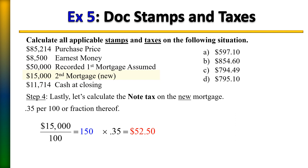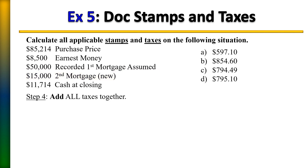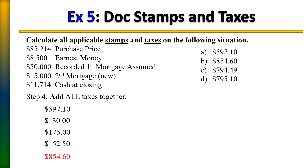All we need to do now is take all of those different amounts and simply add them together. Once we add them together, we get a total of $854.60. And there you have it.